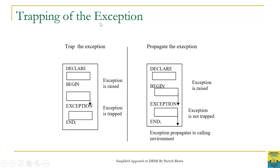Trapping of exceptions is further illustrated in this figure. In the begin block an exception is raised, and when that happens, the control is transferred to the exception section where the exception can be trapped. Sometimes not all runtime errors are handled by the exception section, so the exception is not trapped and will propagate to the calling environment. We can always add an exception section to handle most runtime errors; if the error is still not handled, it will be returned to the user.